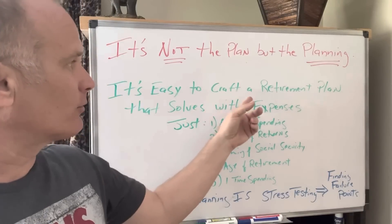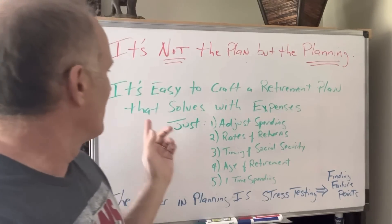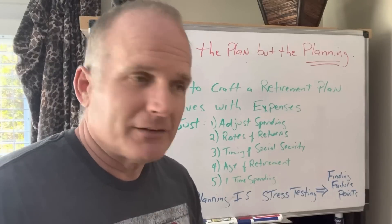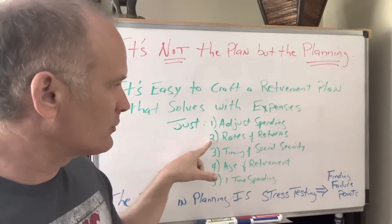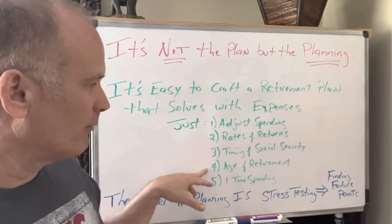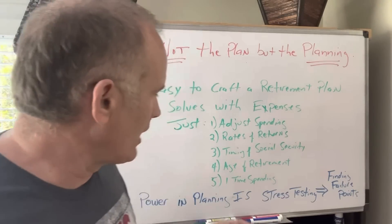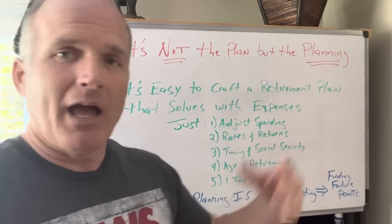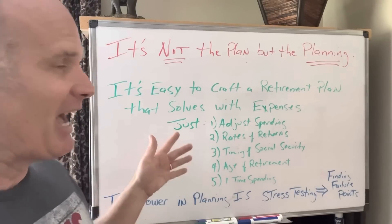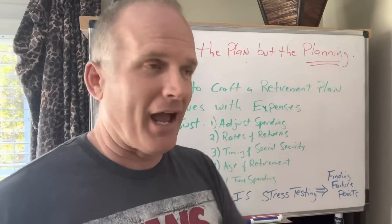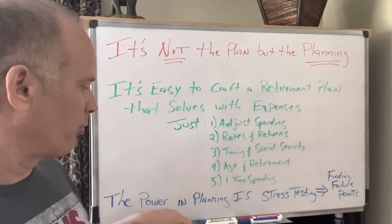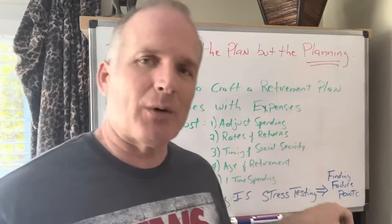It's pretty easy to craft a retirement plan that solves for your expenses. All you've got to do is go into your spreadsheet and adjust your spending, adjust rates of return, move the timing of social security around, move around the age that you're going to retire, and adjust your one-time spending — and you can make it solve. It's not really that hard. But the problem is, I guarantee you my plan and your plan is wrong.